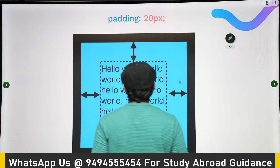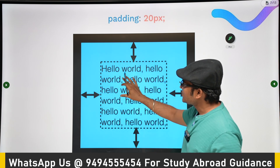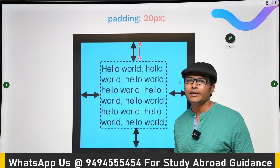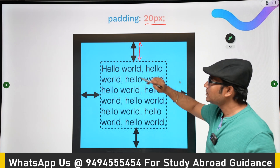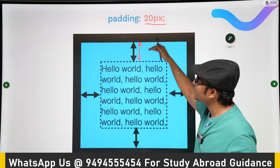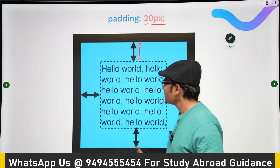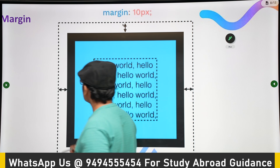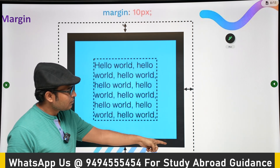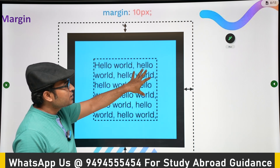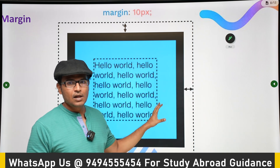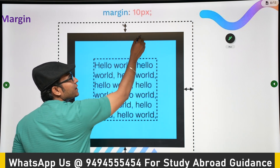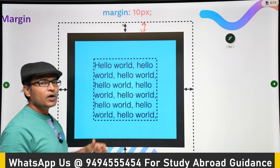Now let us see padding. In a box model, the text is inside the box and the border is around it. Between the text and the border there is some space — that is called padding. If you write padding equal to 20 pixels, there will be a 20 pixel gap between the border and the text on all four sides. There is also something called margin — if you want spacing from one element to another surrounding element, you use margin.